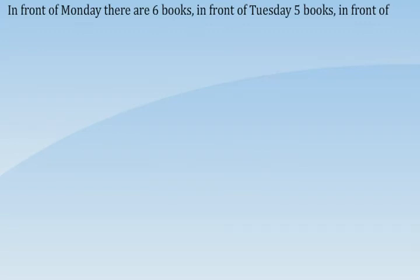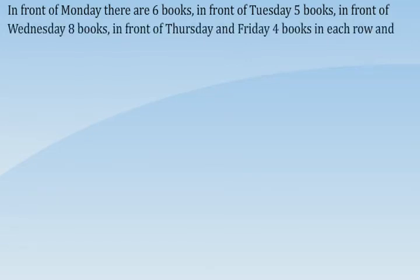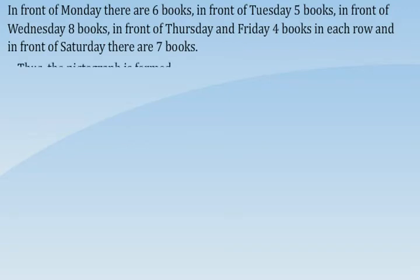In front of Wednesday, 8 books. In front of Thursday and Friday, 4 books in each row. And in front of Saturday, there are 7 books. Thus, the pictograph is formed.